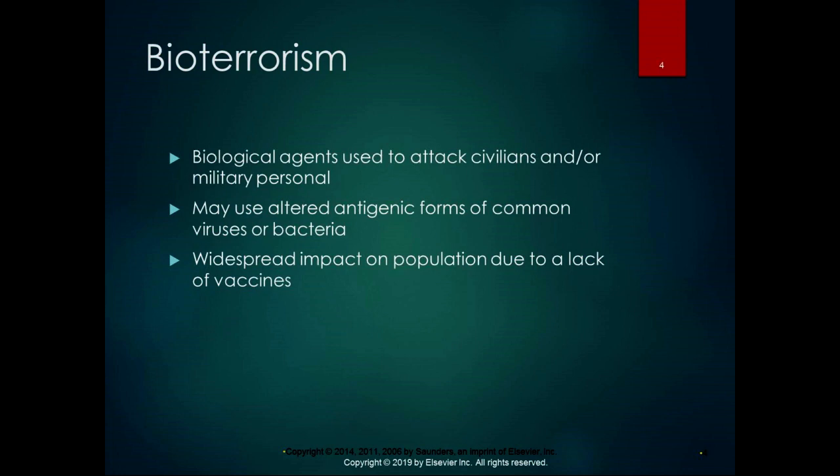There's a section in the book on bioterrorism. Basically, it's using biological agents to attack civilians or military personnel, and it might involve using altered antigenic forms of common viruses or bacteria. It has a widespread impact on the population, and there's no vaccine because they're usually, you know, Frankenstein. That's all we're going to say about bioterrorism — scary stuff.